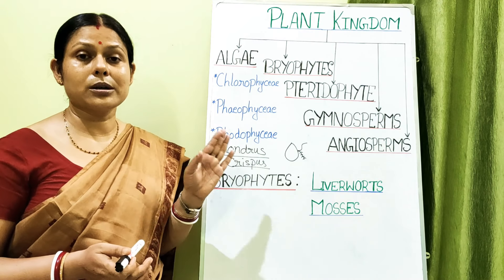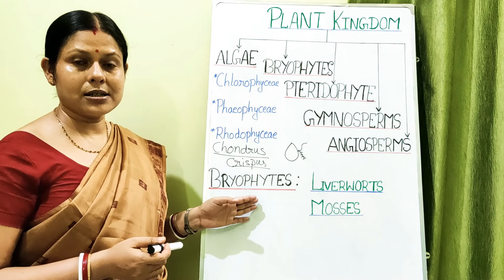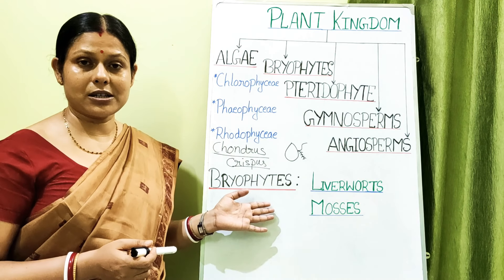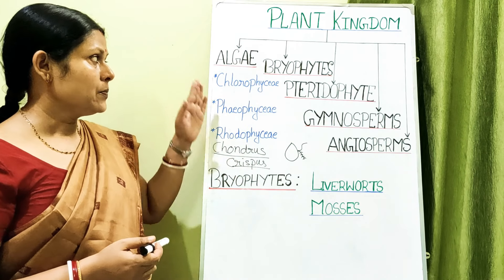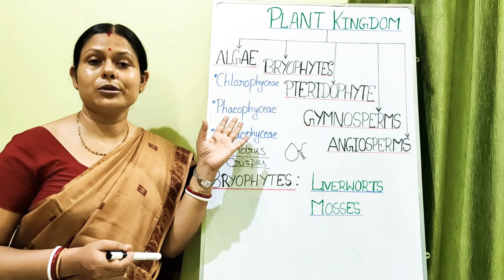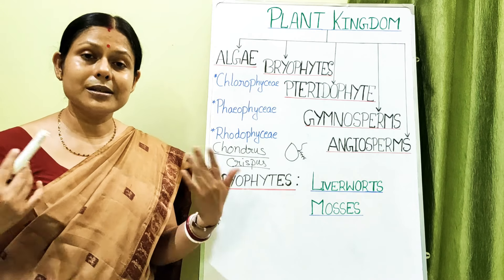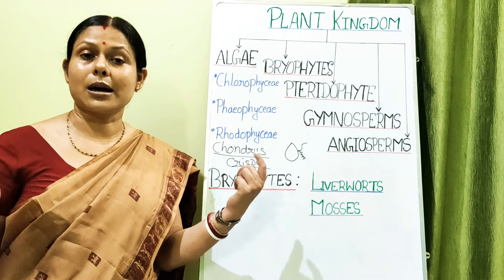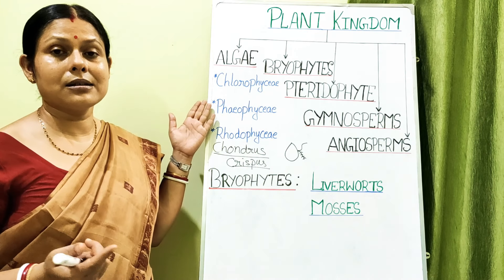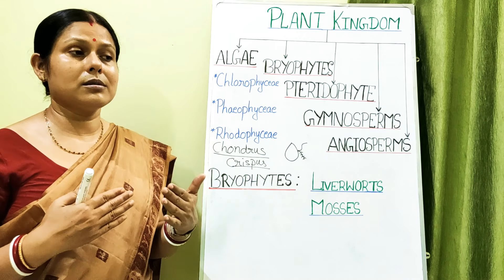The plant body of bryophytes is gametophytic — they have a separate male gametophytic plant body and a female gametophytic plant body. The sporophyte is restricted to the zygote, which after a resting period undergoes meiosis to form spores. When liberated, the spores again produce the gametophytic plant body.